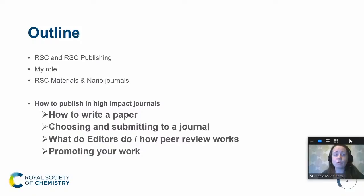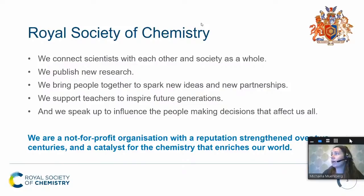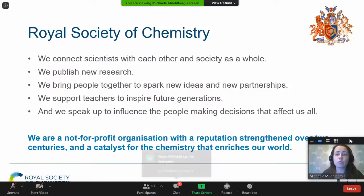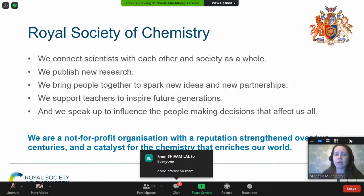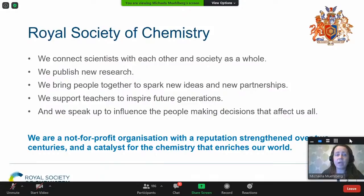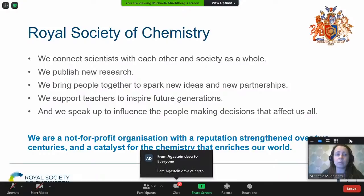Hopefully I will be able to give you a few tips on how to write a research paper, how to choose a journal to submit to, what things you need to take into account, and what happens to your manuscript after you've submitted it. As a first part, I would like to give you an overview of the Royal Society of Chemistry. We are a society, and initially we were founded as a membership society — to really be there for scientists, connect them, and support them in their role as researchers.